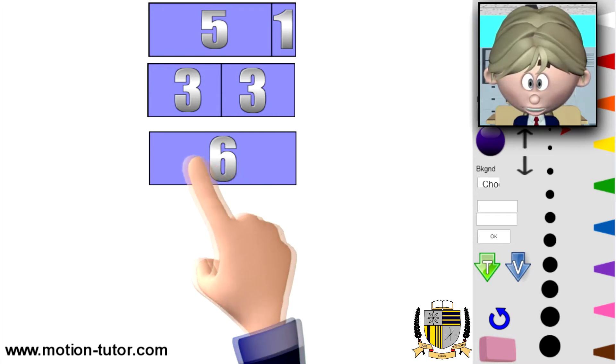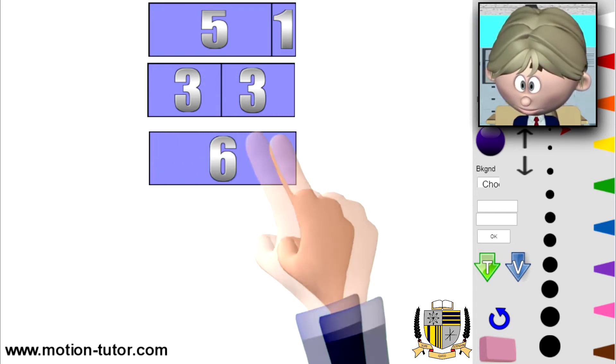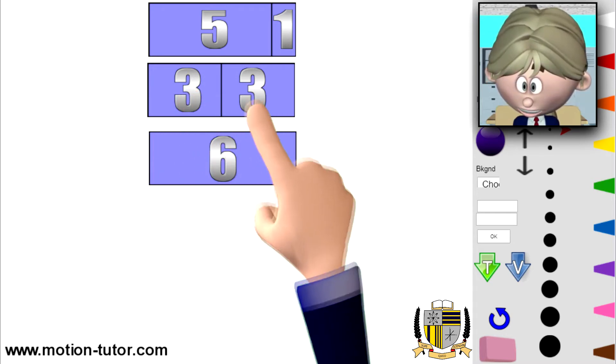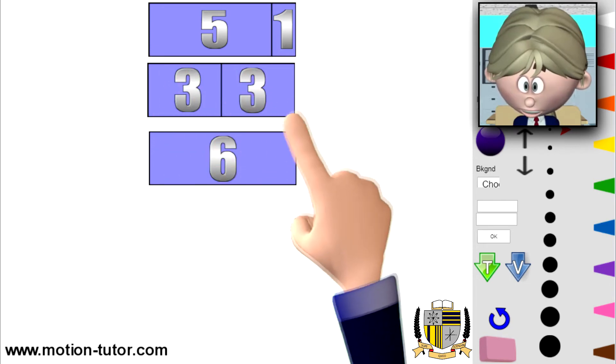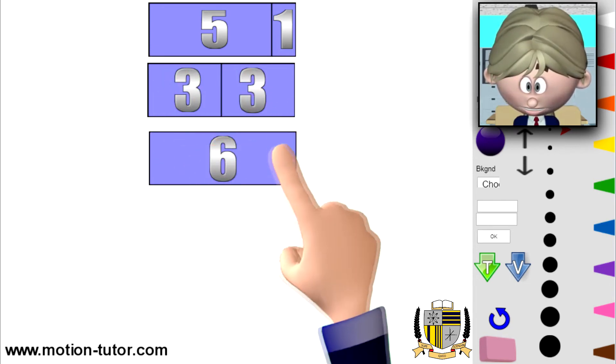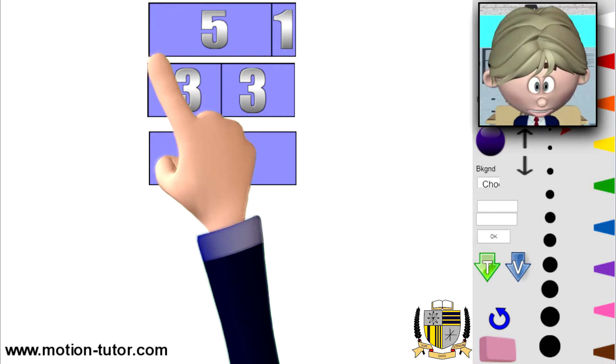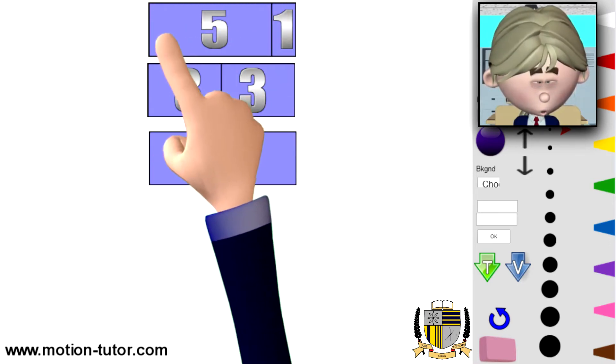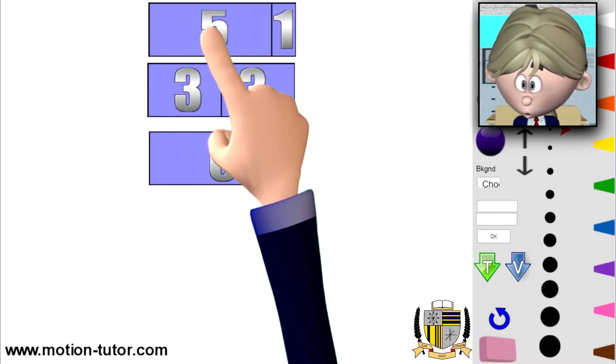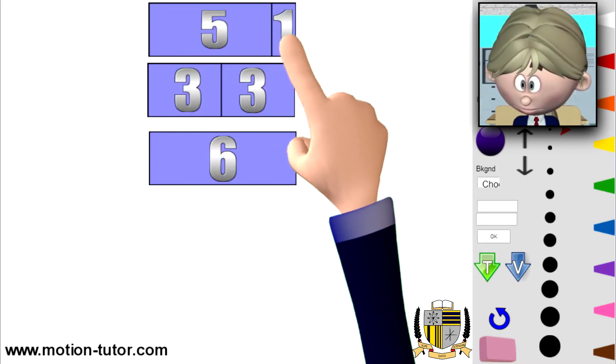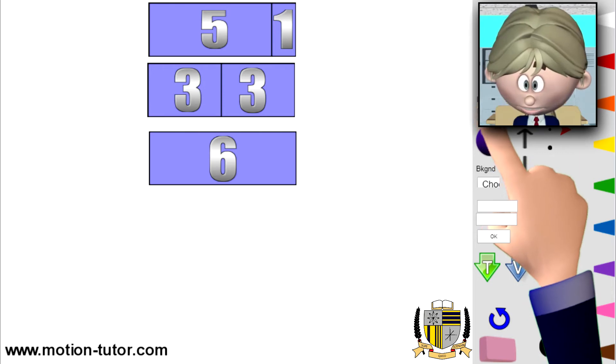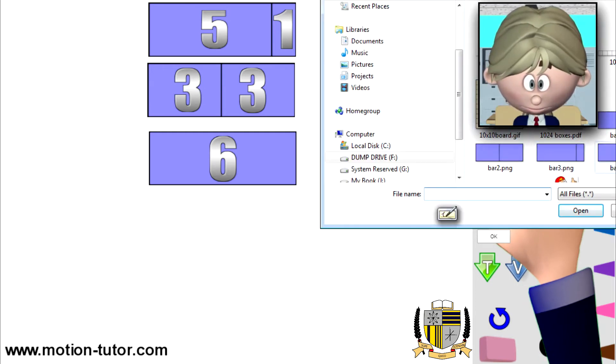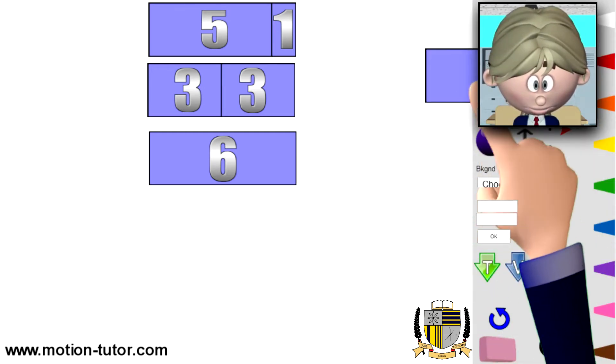So you can see, this whole thing is six. This is three and three, also six, because it's the same exact size of this bar. And this one is the same size as this bar here, but it's broken into five and one. And I will do one more just to further show you this.